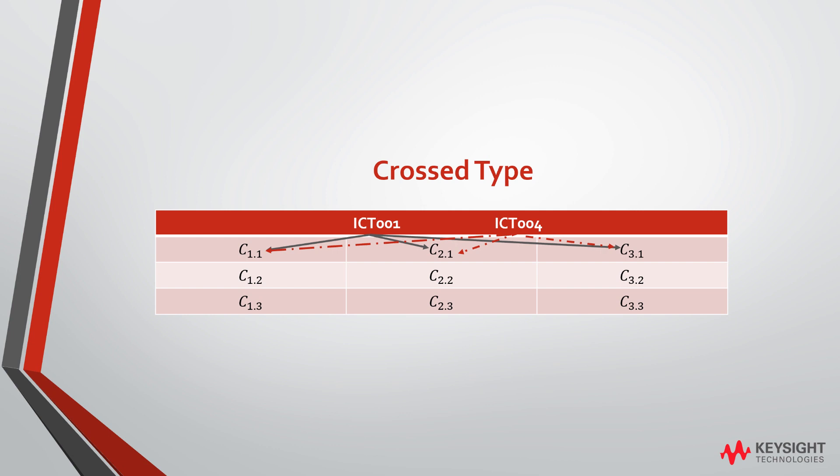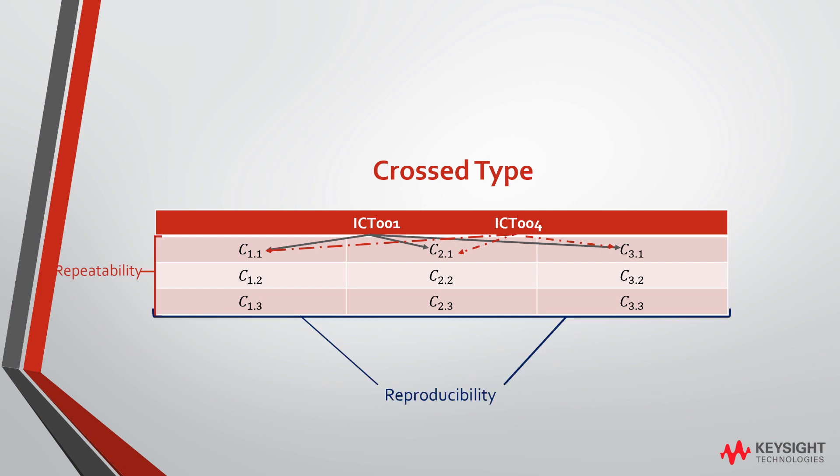Three components have been tested three times respectively — that is repeatability. The comparison among three components is related to reproducibility.